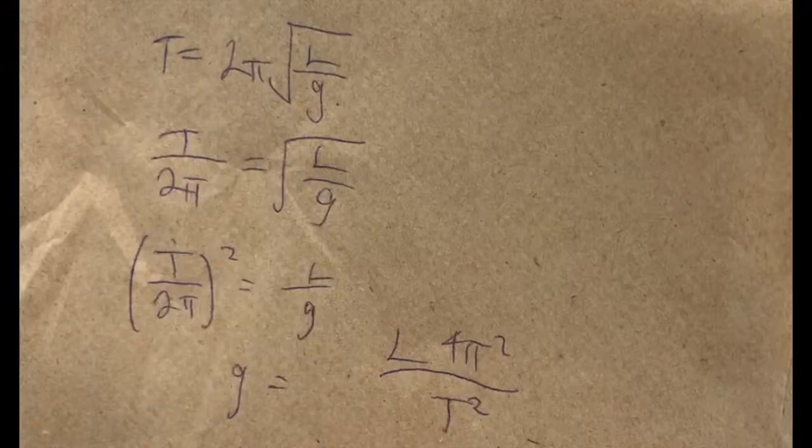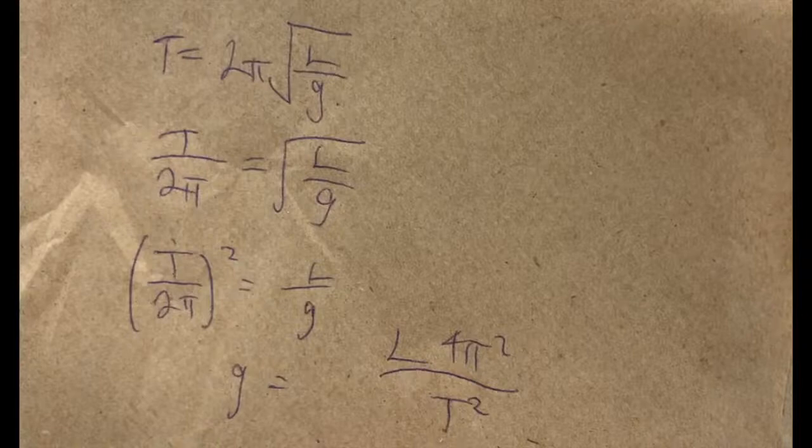For small angled swings, the period is equal to 2 pi times the square root of the length divided by gravity.